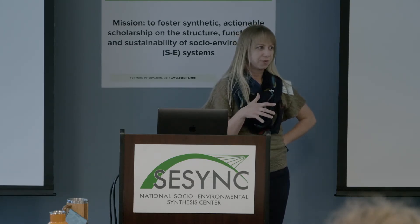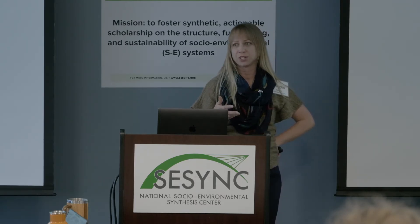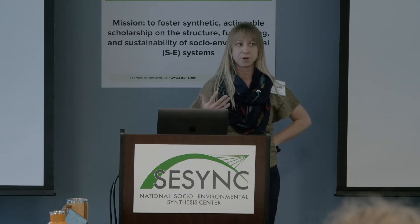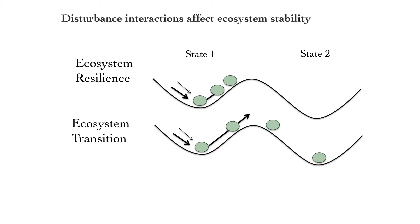This potential patchwork of interactions opens up many regional-scale questions related to how disturbance interactions affect tree mortality and recovery at large spatial scales. We can think about this in the context of ecological stability — how multiple disturbances influence the probability of ecosystem transitions or state shifts.